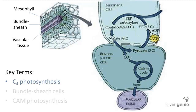C4 plants are fairly common and found in several thousand species of plants, including sugarcane and corn. In the C4 pathway, plants avoid transpiration by keeping their stomata only halfway open. This is a trade-off, though, because the smaller the stomata opening, the less CO2 that can enter the plant.